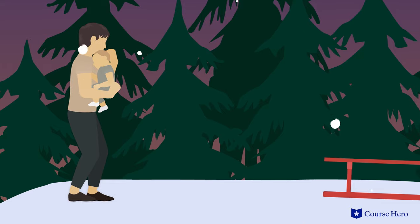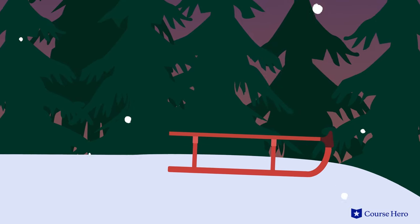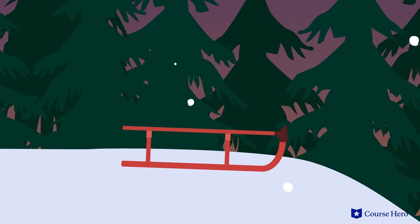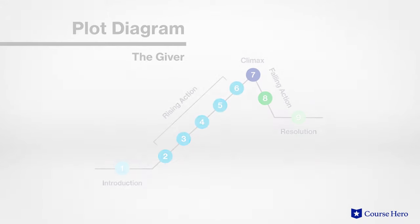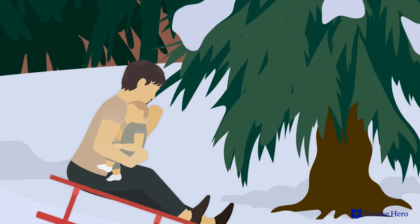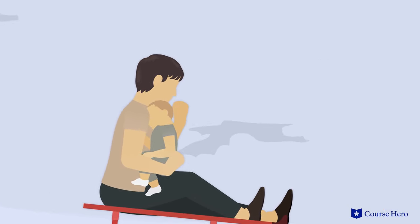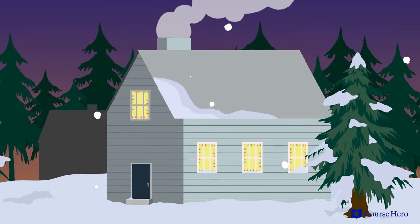Eventually, Jonas finds a sled perched on the top of the hill as though left for him far beyond the community. In the resolution, he and Gabriel race down the hill to where he hopes the people are waiting for him with love and warmth, elsewhere.